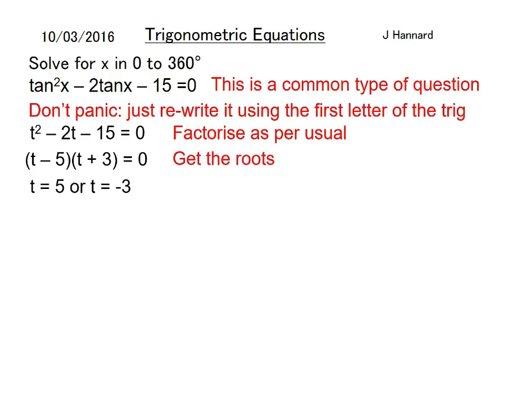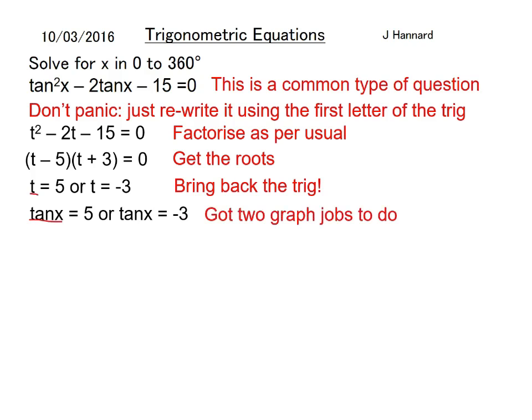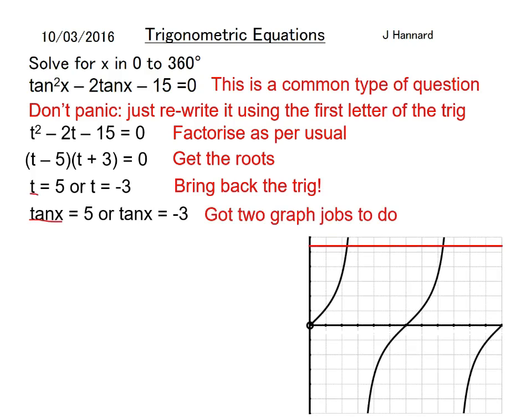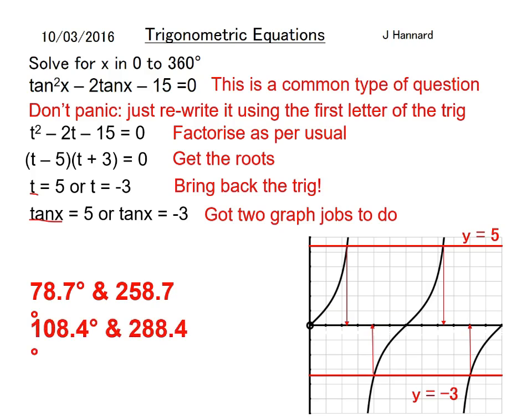So we can say now that t equals 5 or minus 3. Bring back the trig: tan x equals 5 because remember t equals tan x. So tan x equals 5 or tan x equals minus 3. And then you do the graph again but draw your two lines this time, so you've got four solutions. For that one you'd get 78.7 and 258.7 because remember you add 180 degrees on for tan graphs.